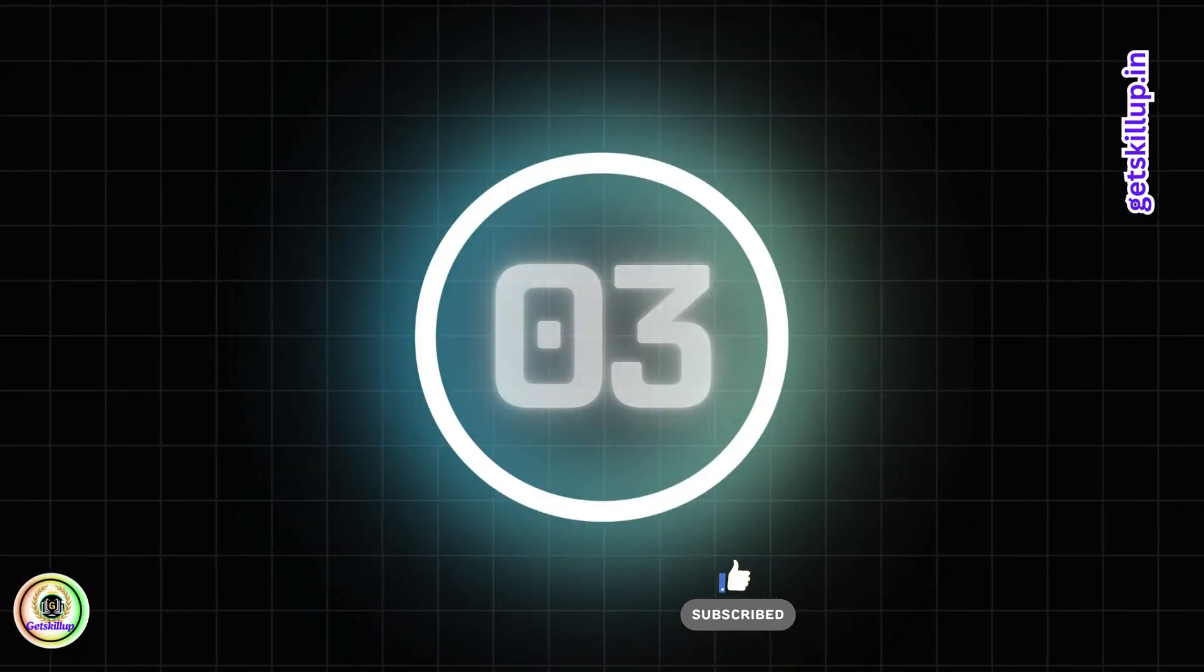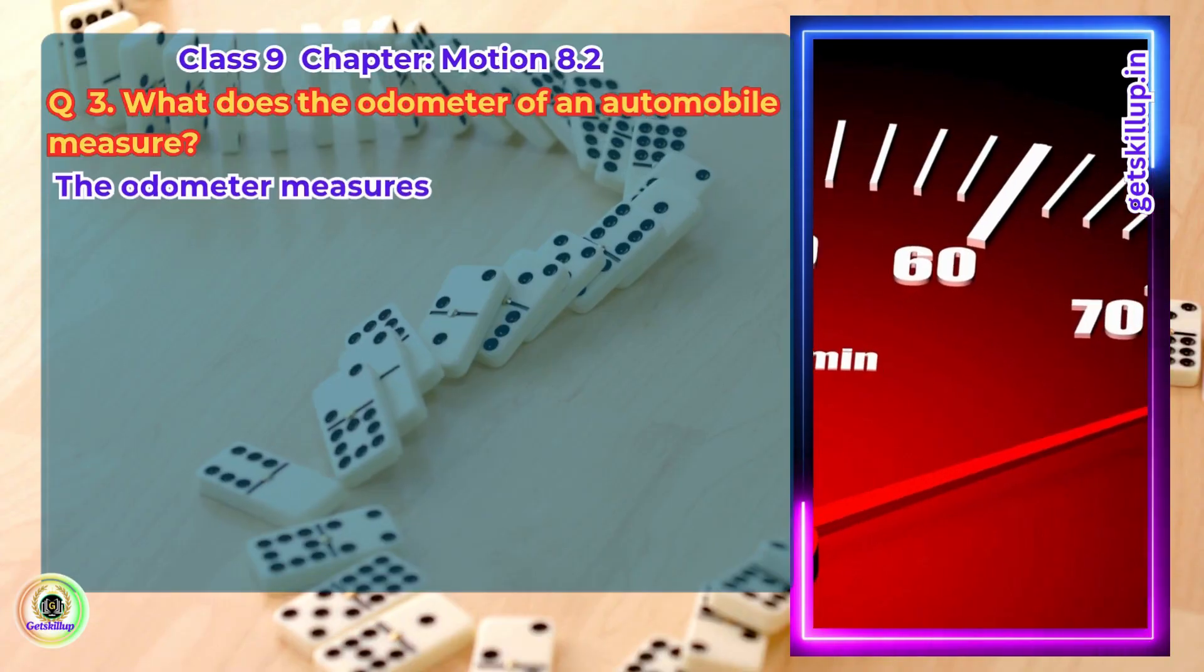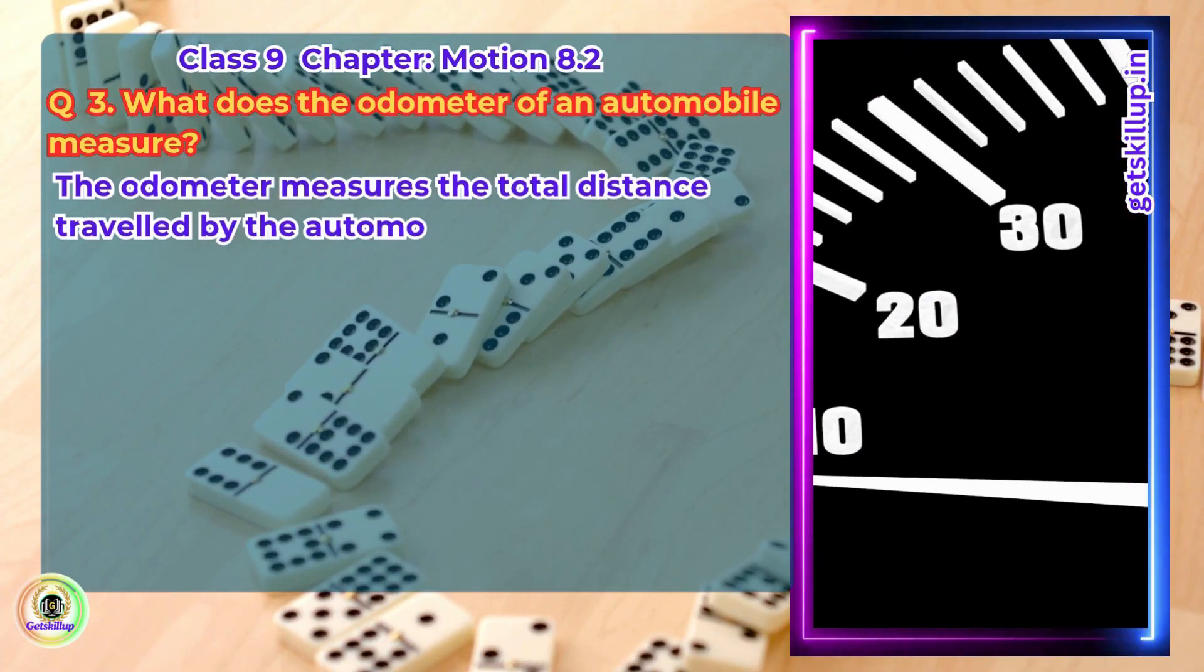Question 3. What does the odometer of an automobile measure? Answer. The odometer measures the total distance travelled by the automobile.